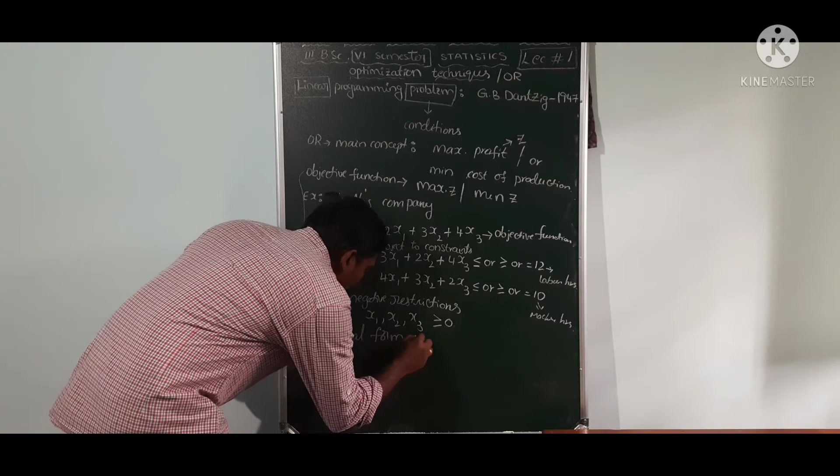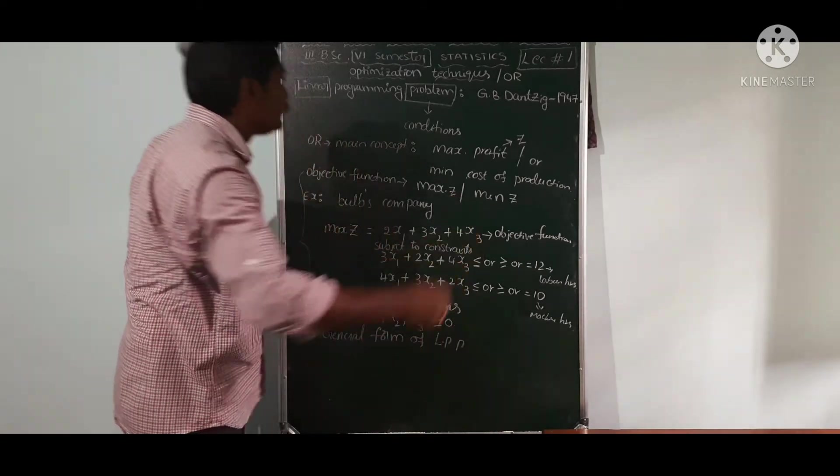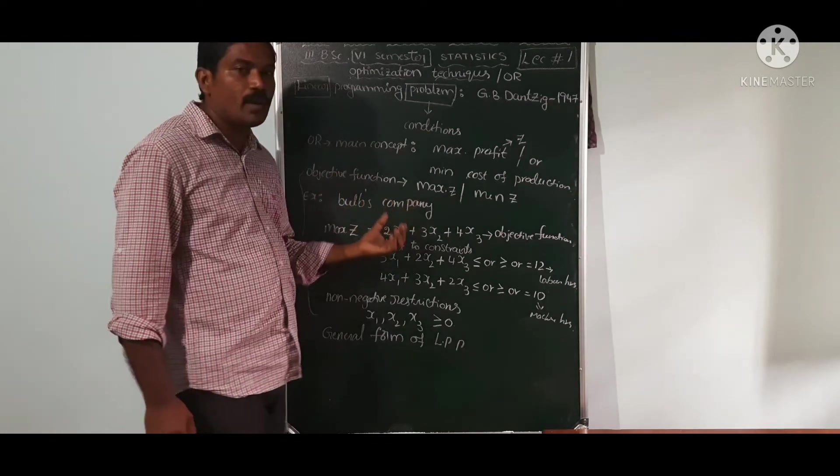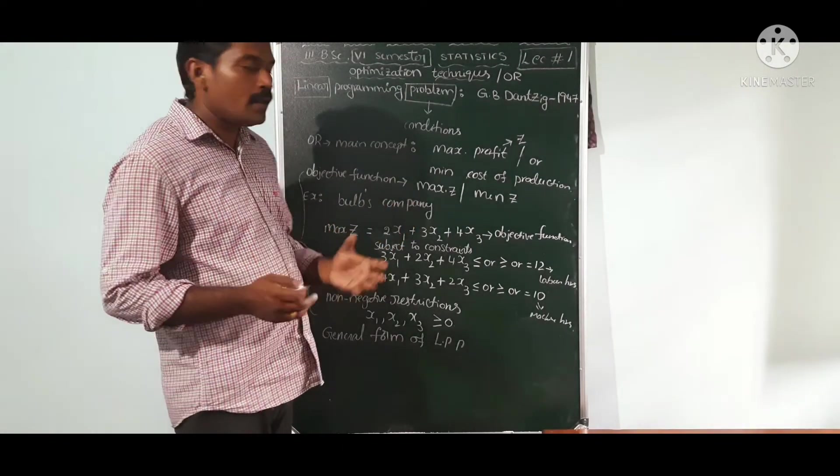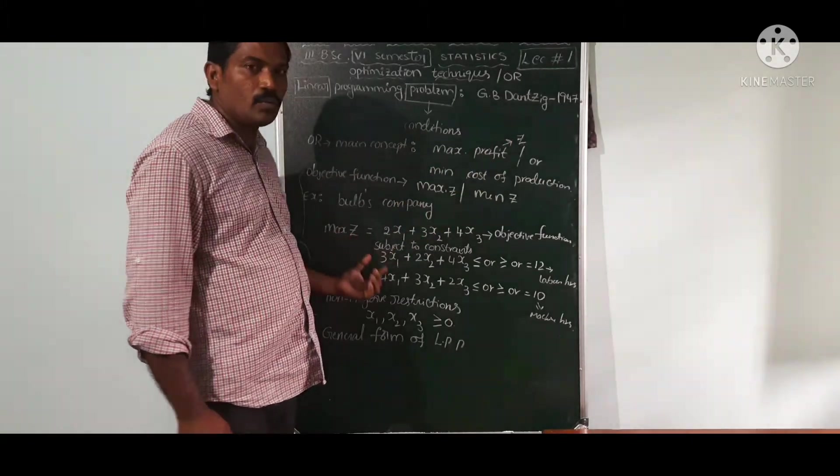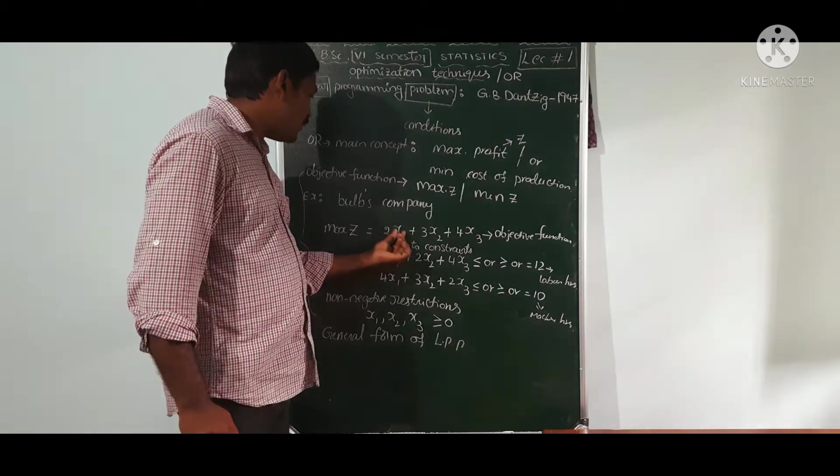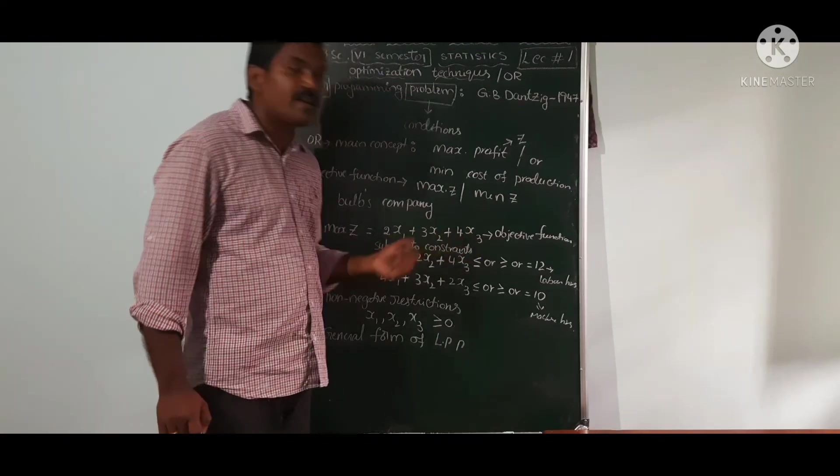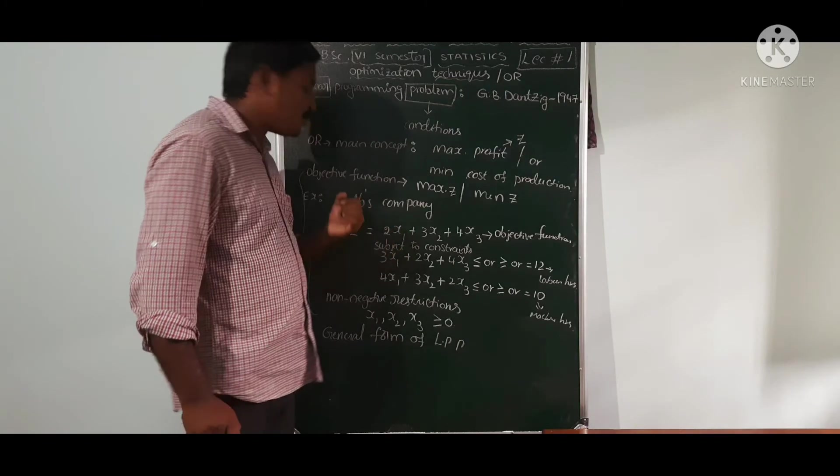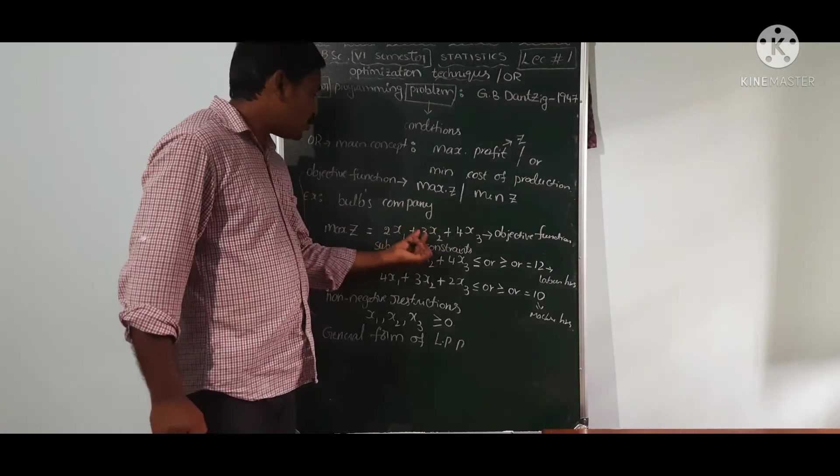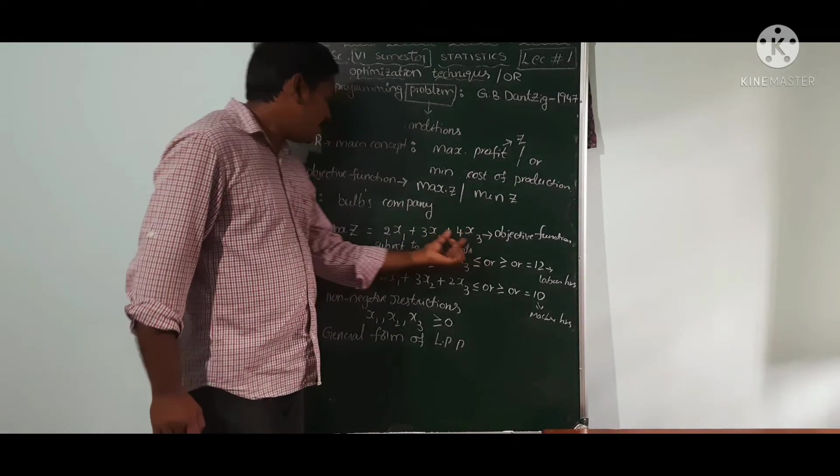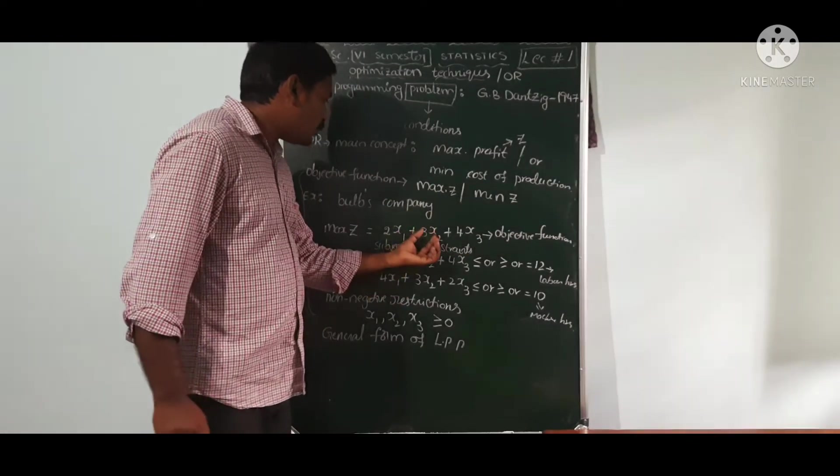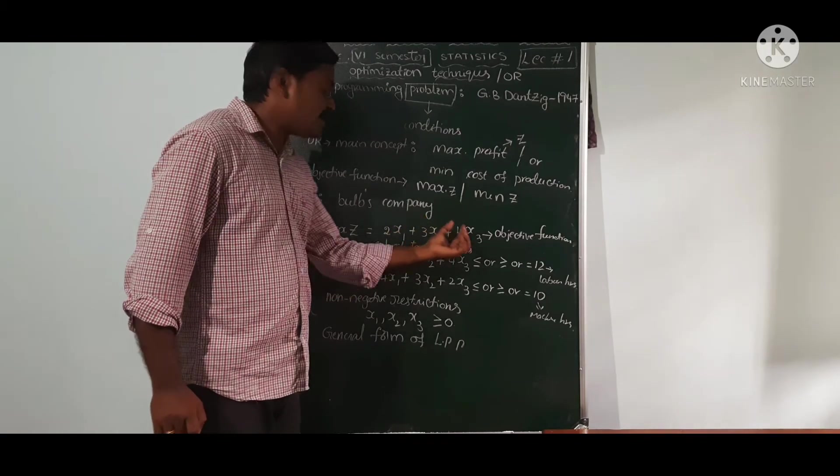General form of LPP. First of all, that should be one example. Profit. Three different types of products x1, x2, x3. x1, x2, x3 are decision variables. x1, one product cost 2 rupees, x2, one product 3 rupees, x3, one product 4 rupees.